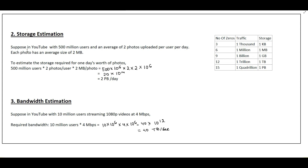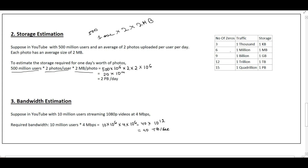Second is storage estimation. Suppose on YouTube we have 500 million users, and on average each user uploads two photos, and each photo size is 2 MB. So to compute the storage needed, we multiply 500 million users × 2 photos per user × 2 MB per photo. For million, referring to the table, it is 10^6, so 500 million becomes 500 × 10^6. For 2 MB, MB is also 10^6.